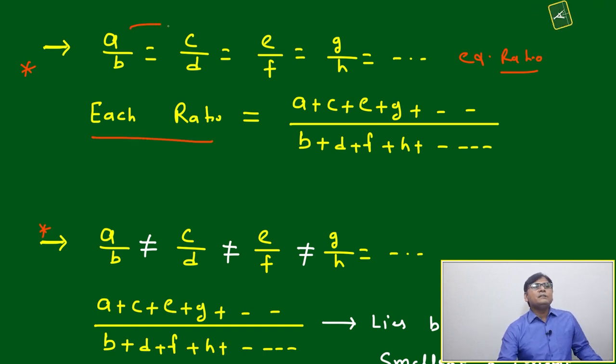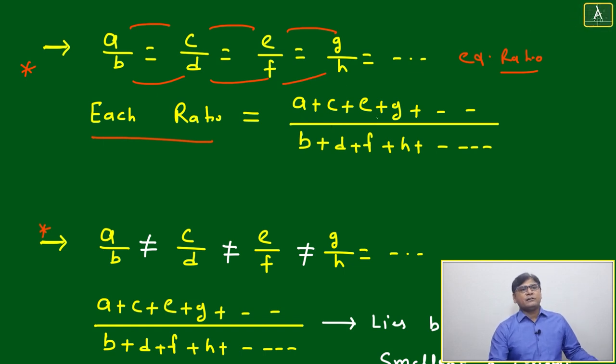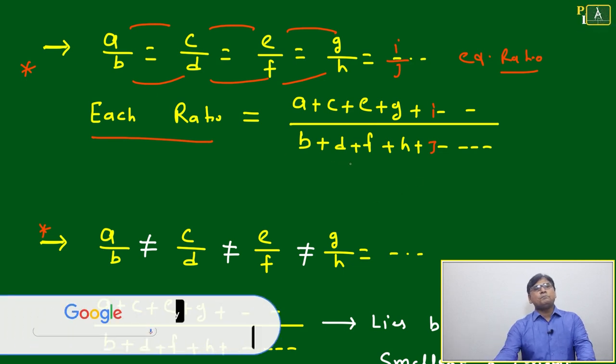Then each and every ratio will be equal to the sum of all numerators divided by the sum of all denominators. So a plus c plus e plus g, and it keeps going further, plus i, divided by b plus d plus f plus h plus j.